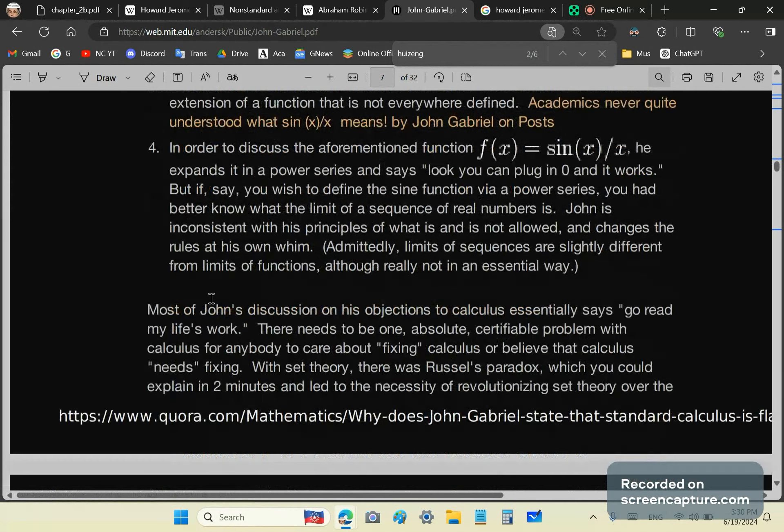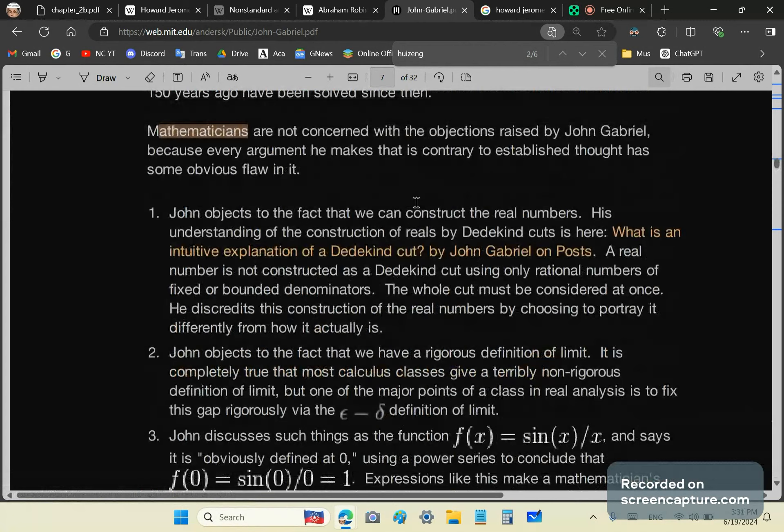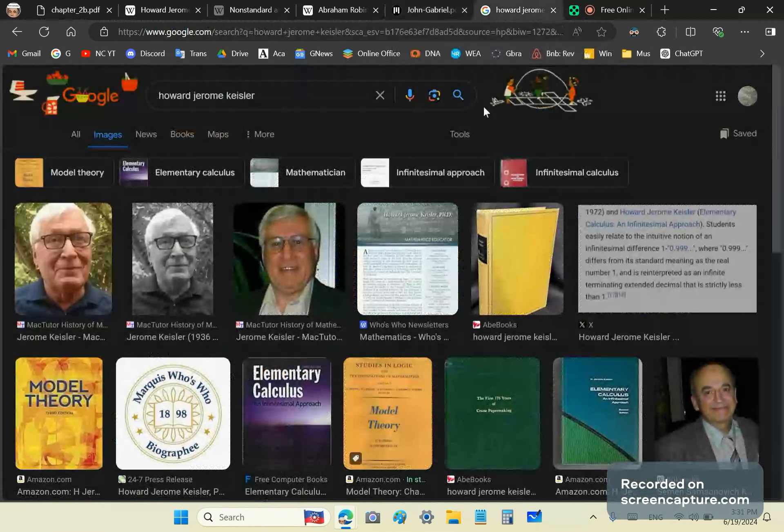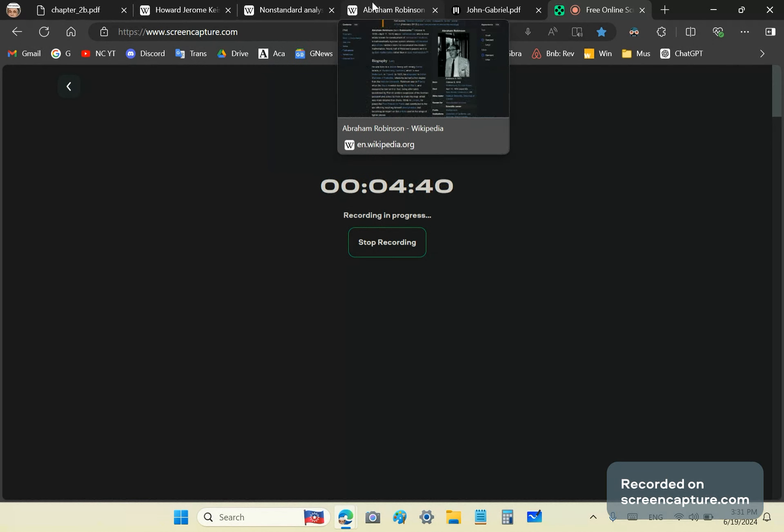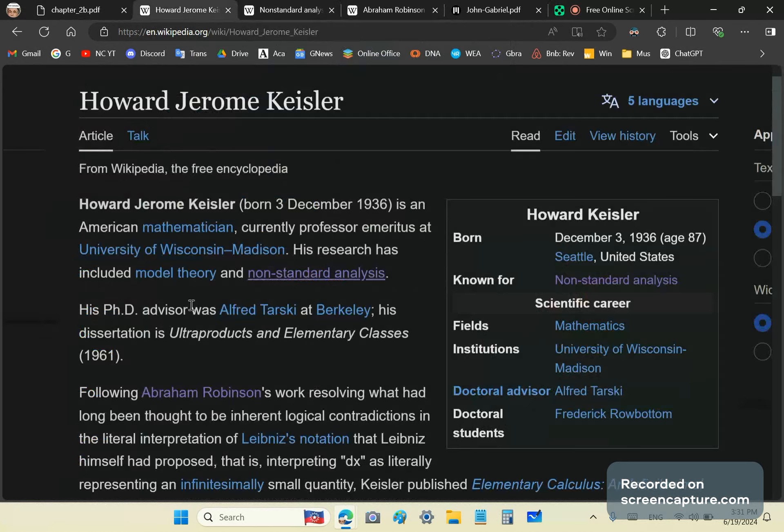That's Jerome Keisler, who was, by the way, a doctoral student of Alfred Tarski. Now, Alfred Tarski was that one equals two idiot. Remember he and Banach, I think it was Stefan Banach, came up with the Banach-Tarski theorem, total bullshit there as well. And that's based on set theory and axioms too.